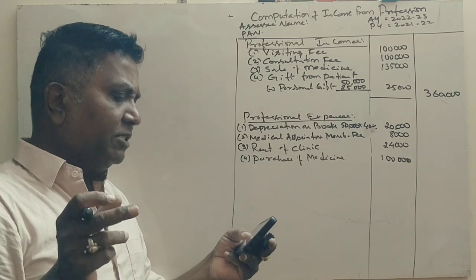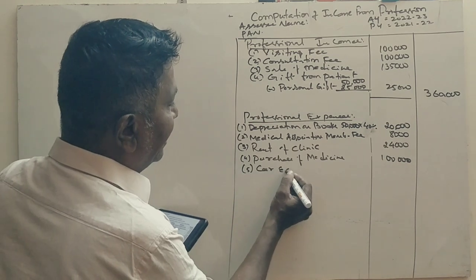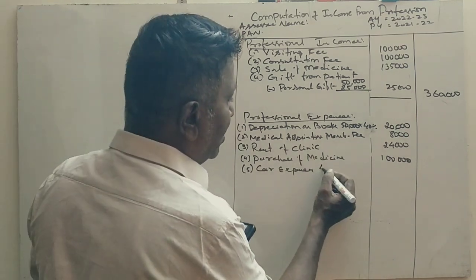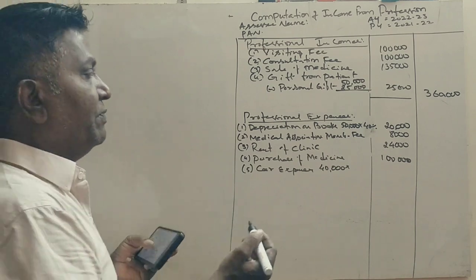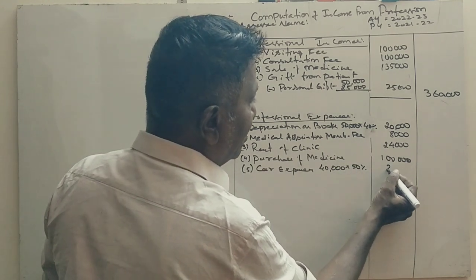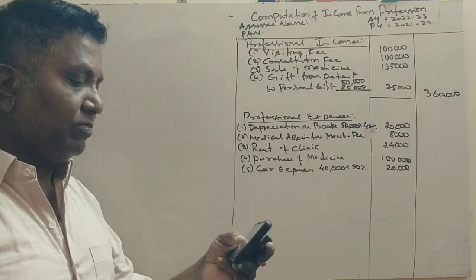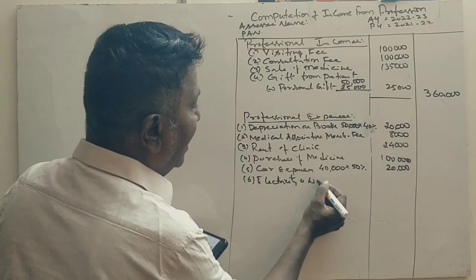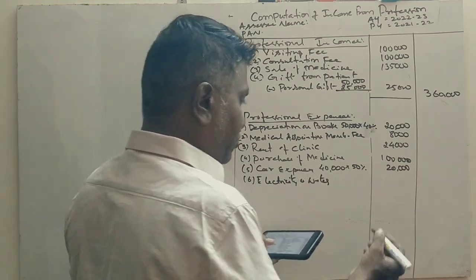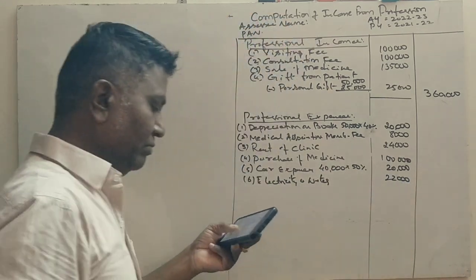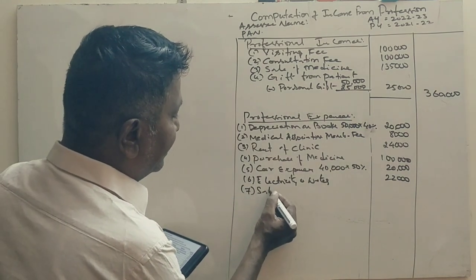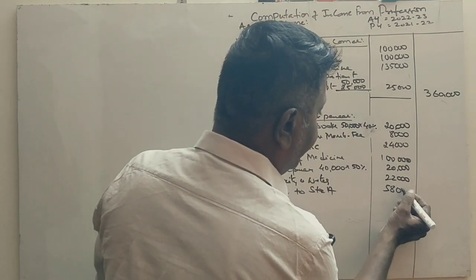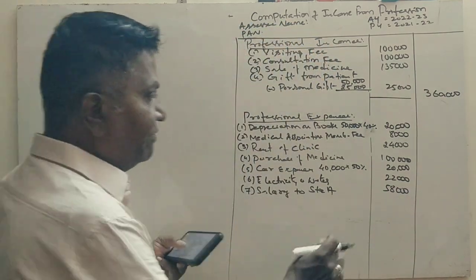Next, car expenses: the first adjustment is that 50% of total car expenses relate to personal use, so only 50% is allowed as professional expense. Electricity and water charges are professional expenses. Salary to staff is a professional expense — 56,000 rupees.